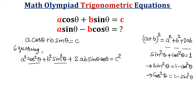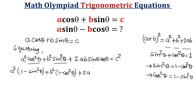So I will put a²(1 − sin²θ) plus b²(1 − cos²θ), and this will be unchanged: plus twice ab sinθ cosθ, is equal to c².